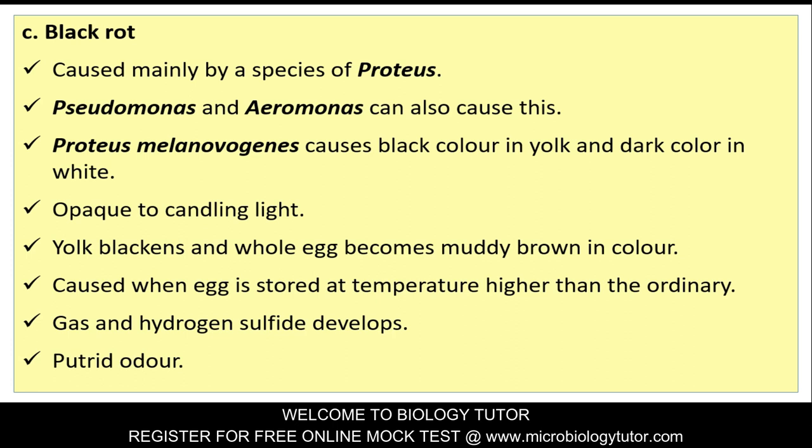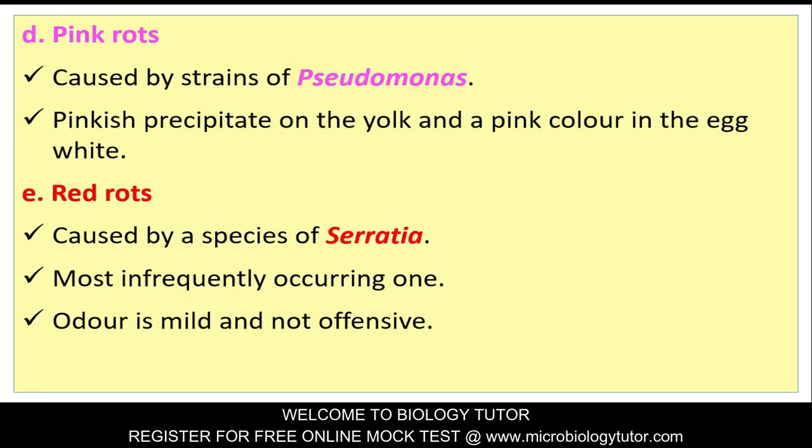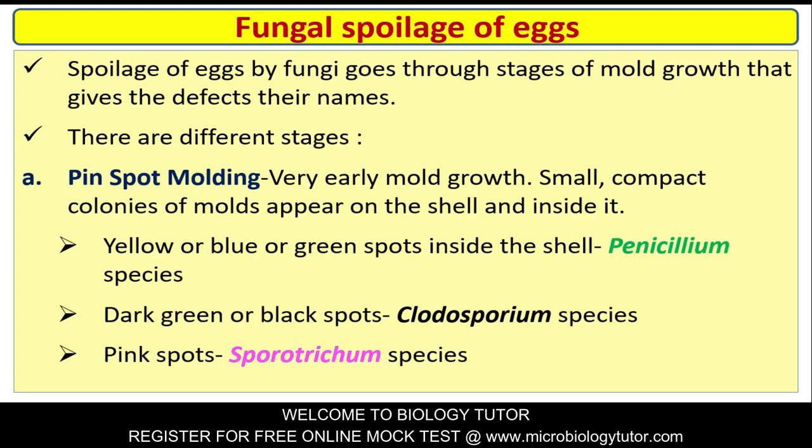Black rot also produces gas and hydrogen sulfide, causing putrid odor. Pink rot: Caused by strains of Pseudomonas - pinkish precipitate on the yolk and a pink color in the egg white. Red rot: Caused by species of Serratia - the most infrequently occurring one, with a mild and not offensive odor.